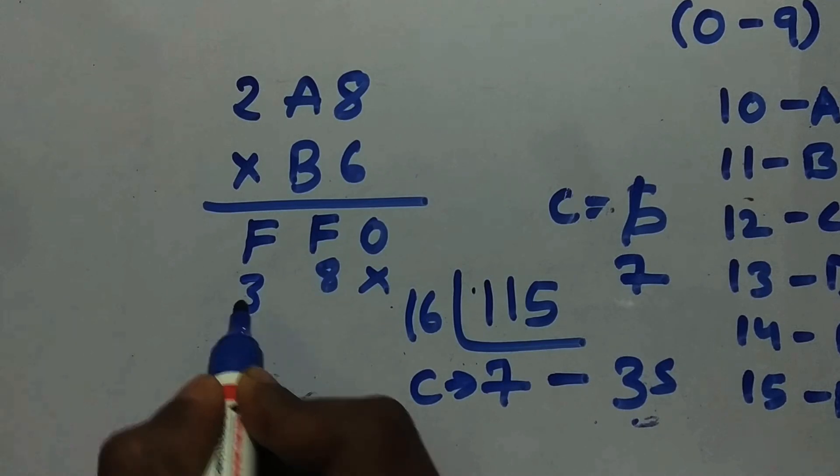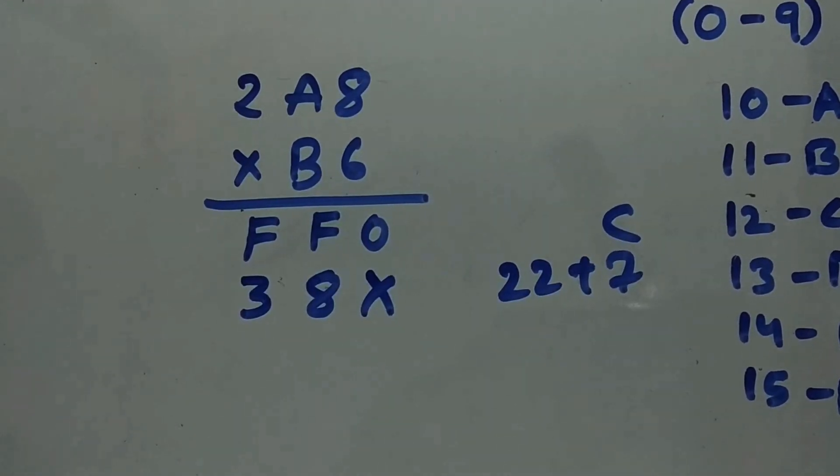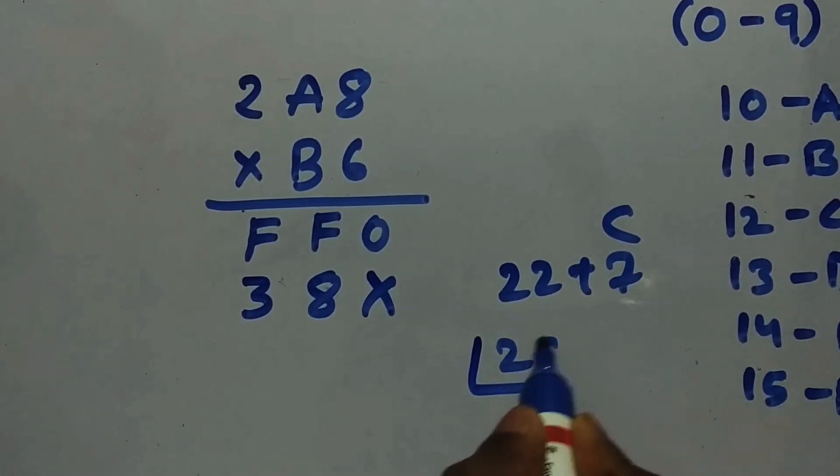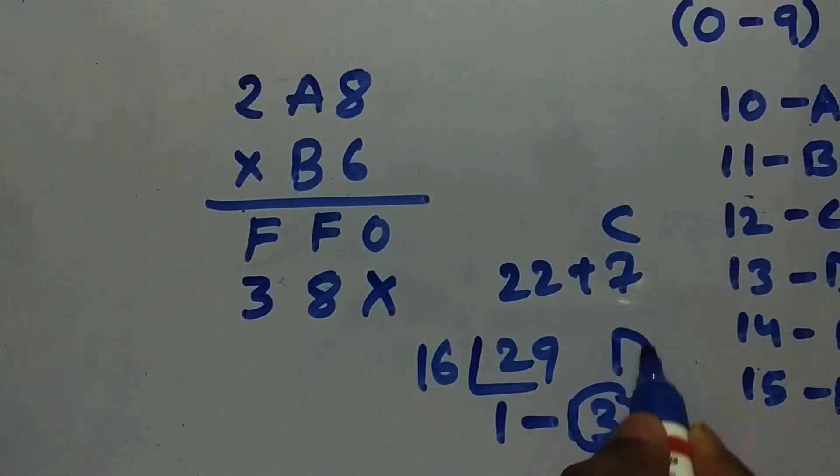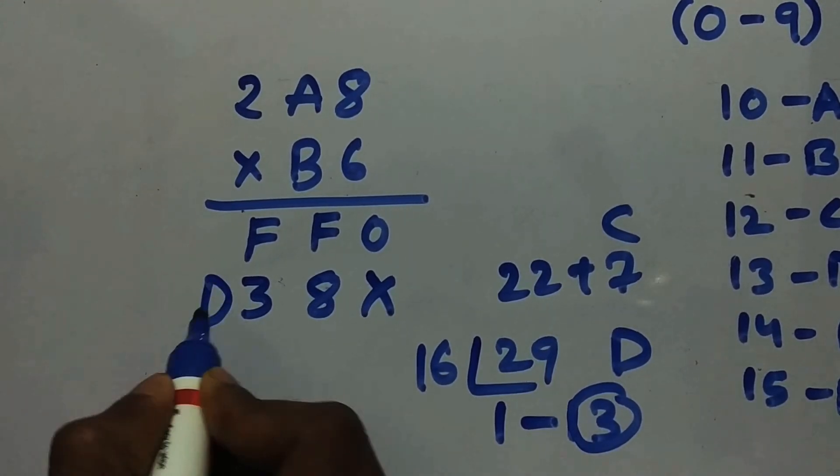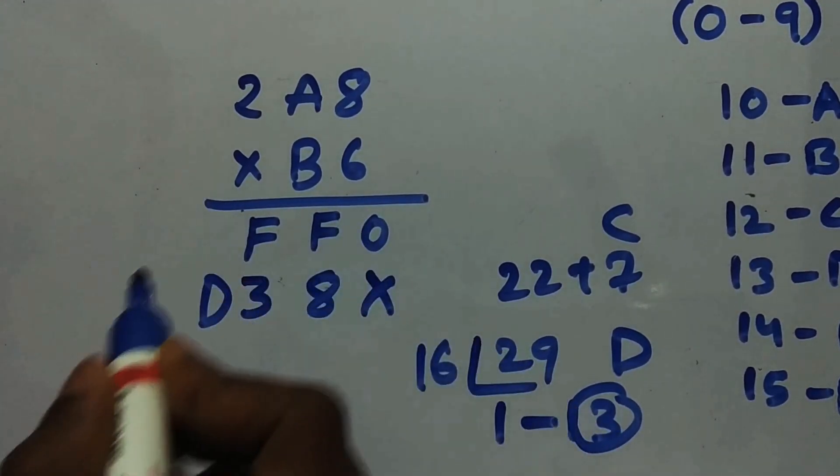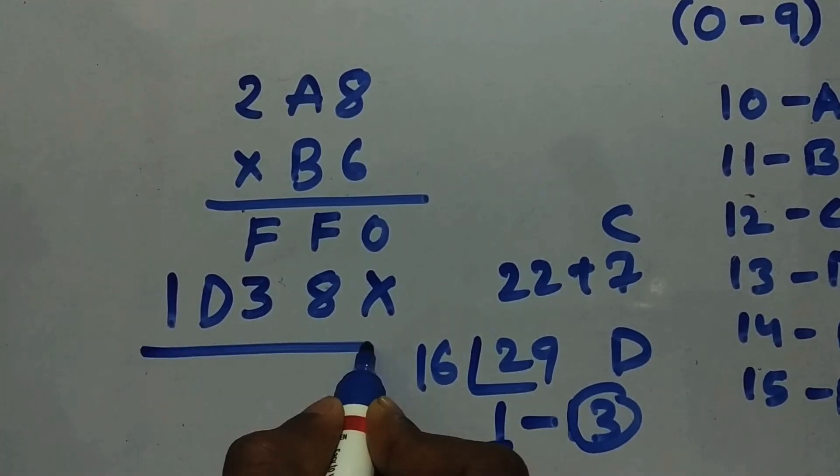Now 11 into 2 is 22 plus 7. Convert 29 into hexadecimal. 16 times 1 is 16, and 13. 13 is D in hexadecimal. D is the sum, and since we don't have any other term to multiply, carry will go over here. So our answer is this one for B multiplication.